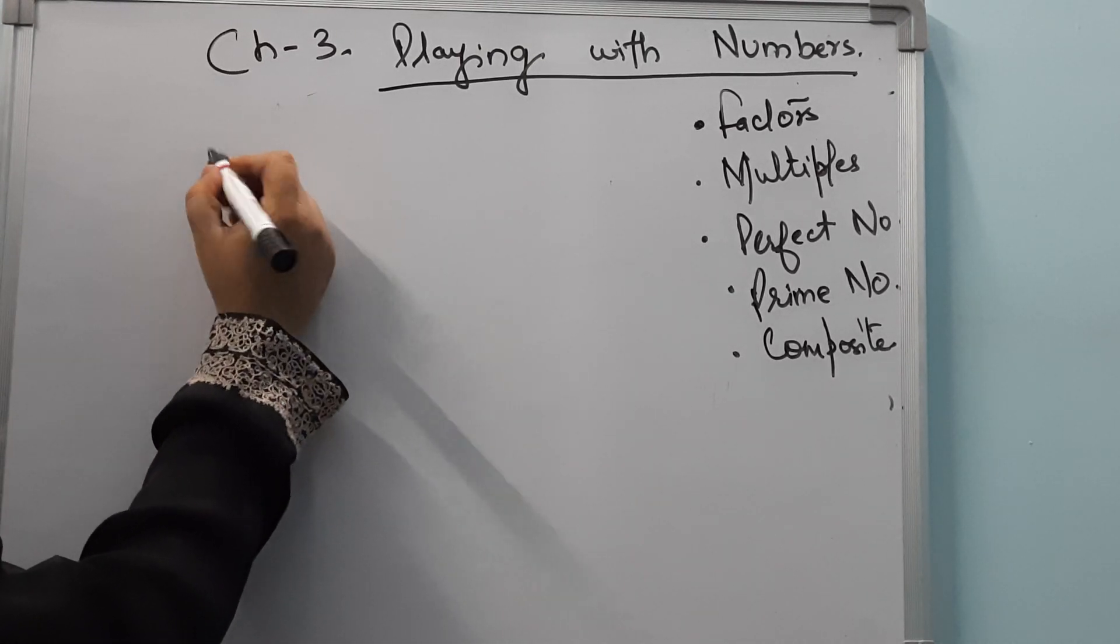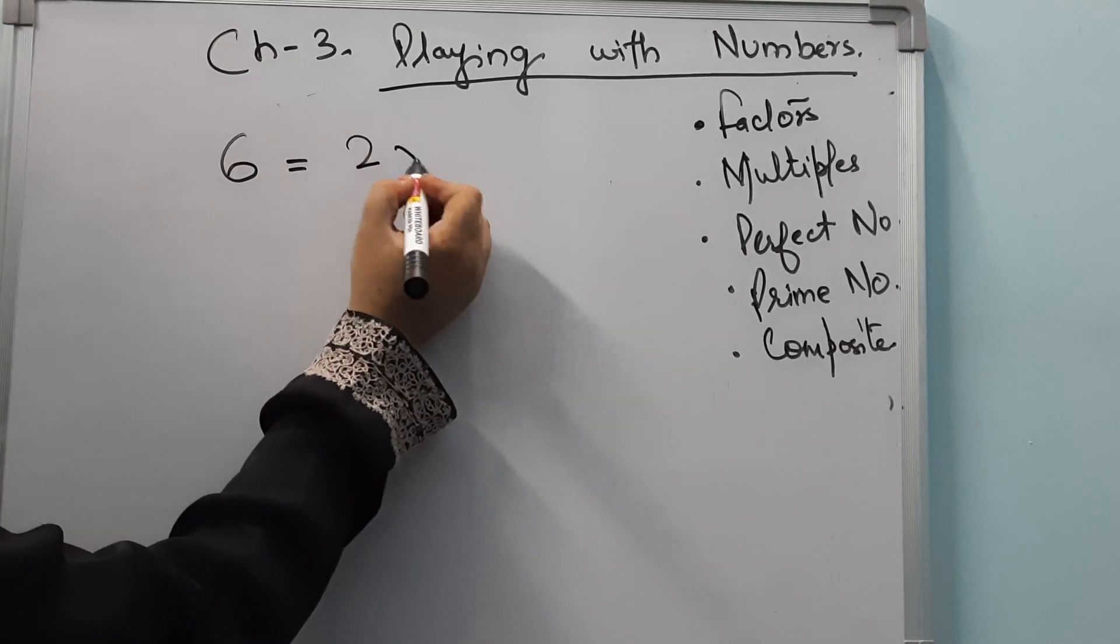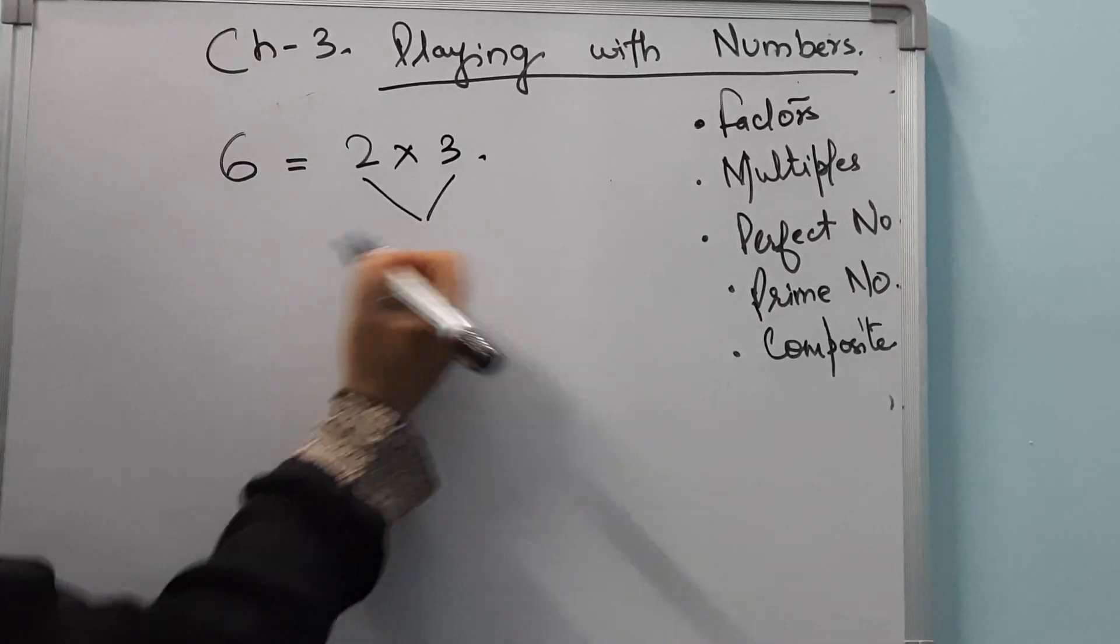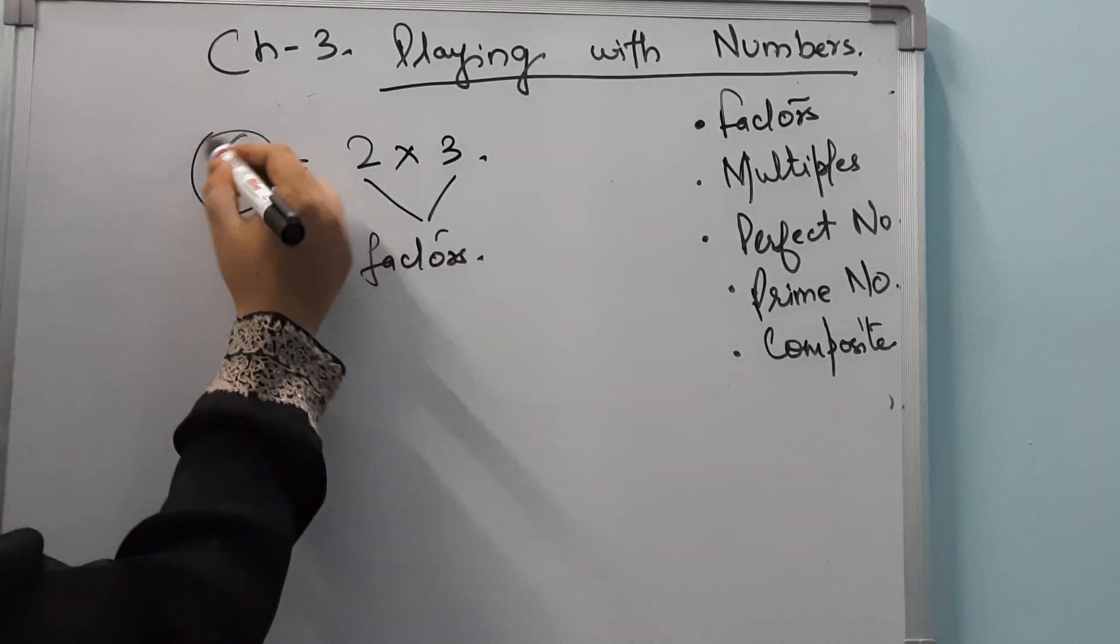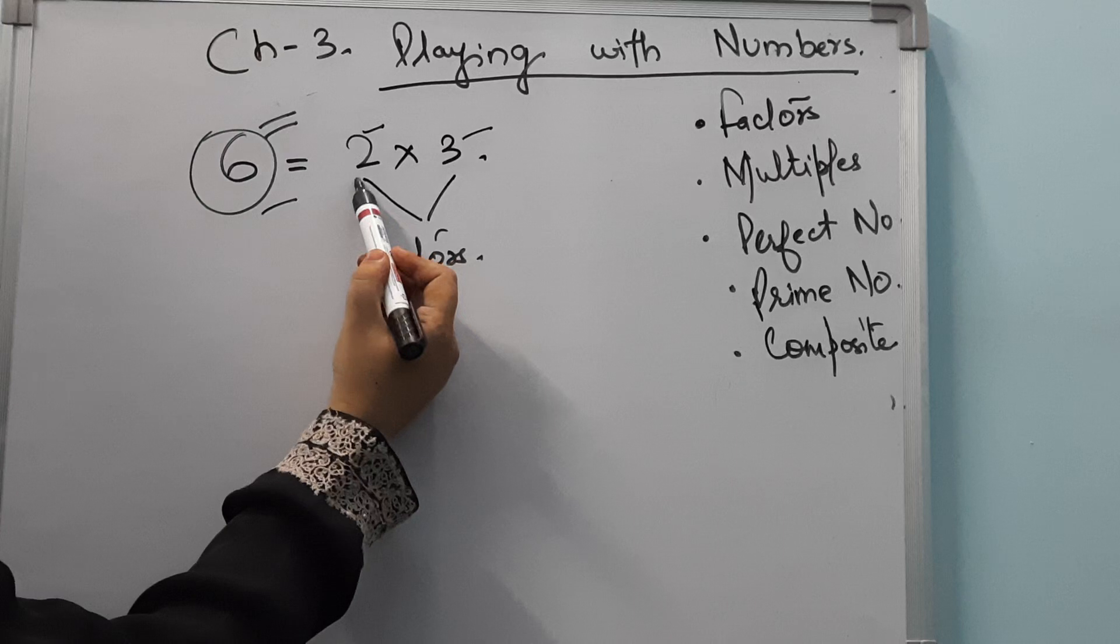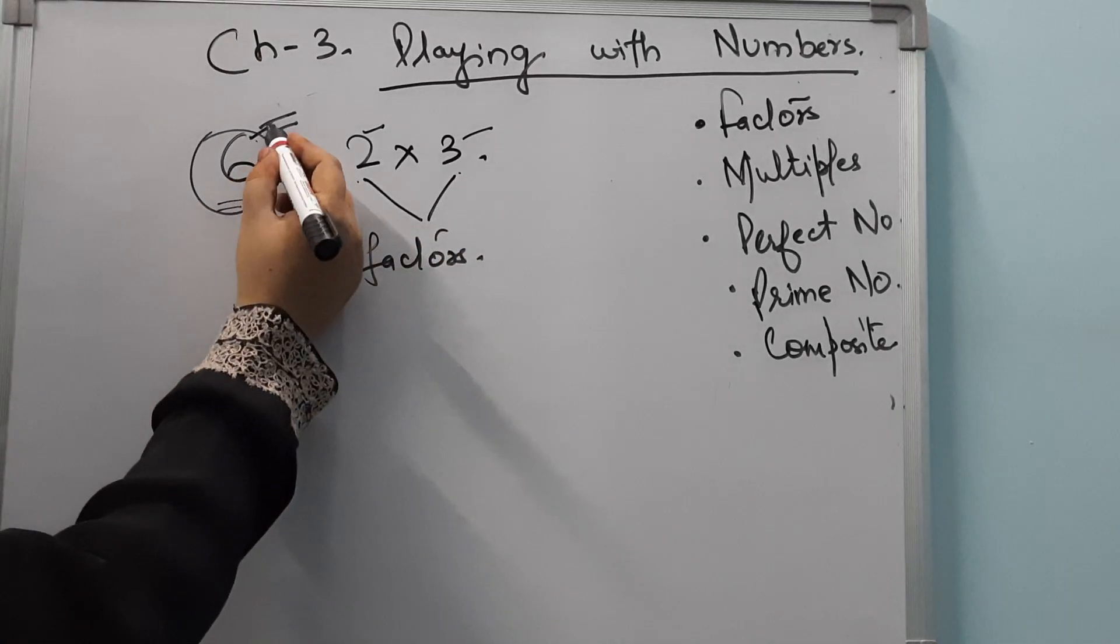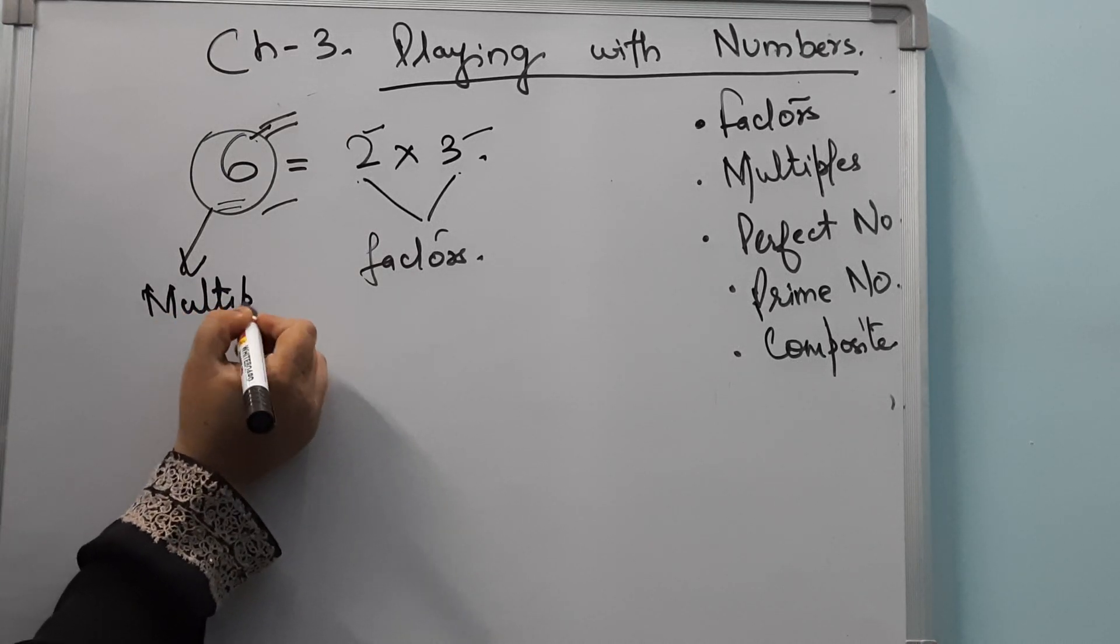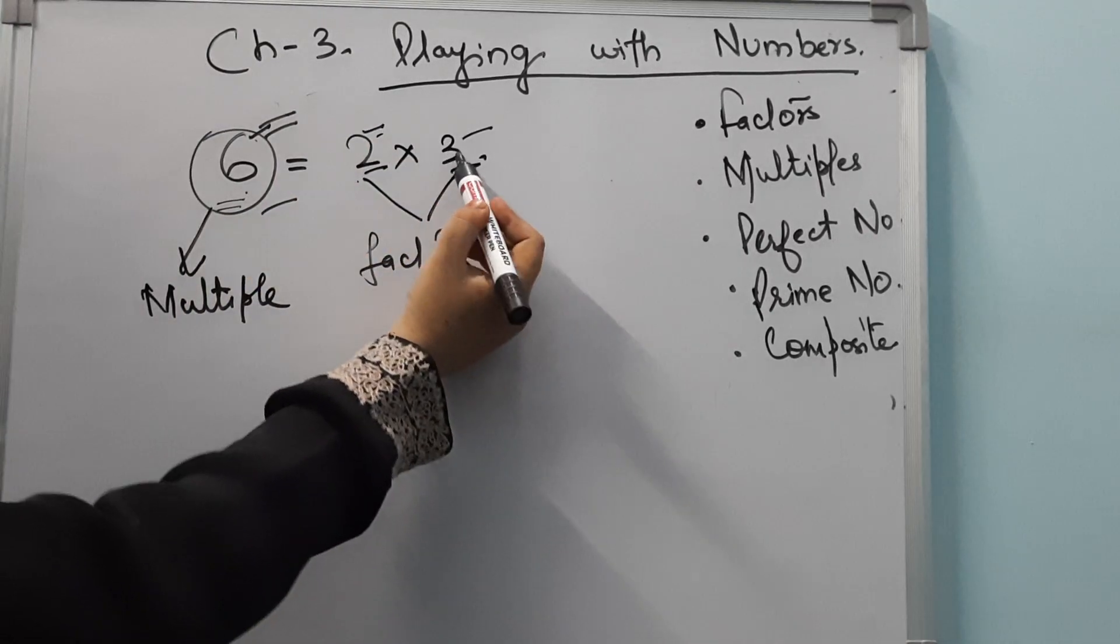Suppose we take the number 6. We can write 6 as 2 × 3. Here, 2 and 3 are the factors of 6, meaning 6 is exactly divisible by 2 and 3. And 6 is the multiple of 2 and 3. It comes from the table of 2 and 3.